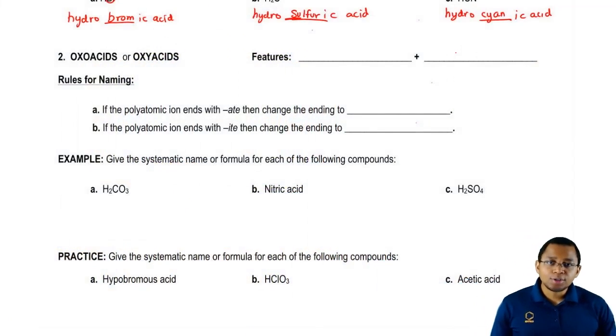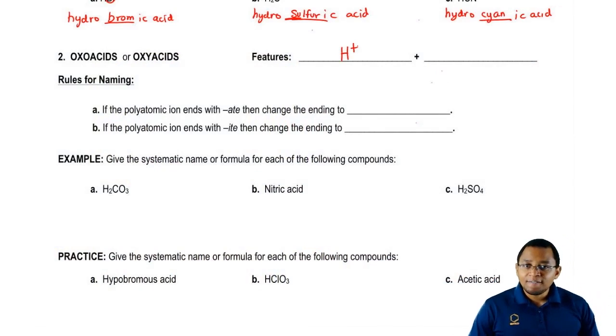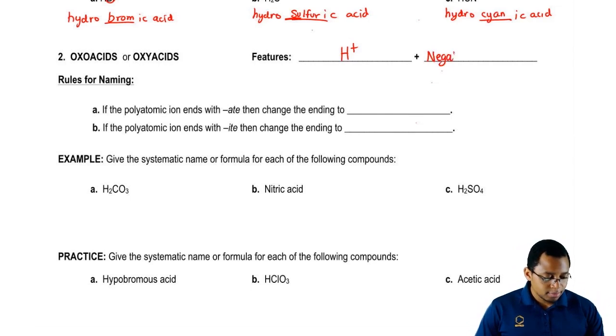First things first, what are the features of an oxy or oxo acid? We have to say that they contain H+, and the second feature is that they possess a negative polyatomic ion with oxygen or oxygens.